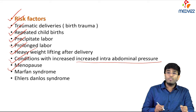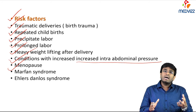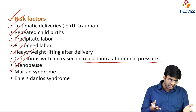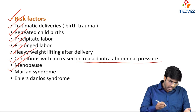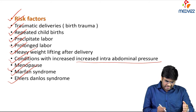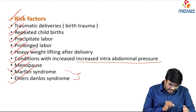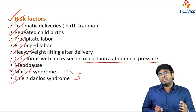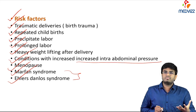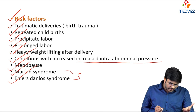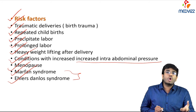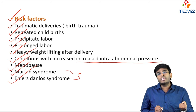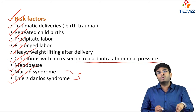Menopause causes weakening of the pelvic diaphragm and stretching of ligaments, which can lead to pelvic organ prolapse. Connective tissue disorders such as Marfan syndrome and Ehlers-Danlos syndrome impair connective tissue function so ligaments and the pelvic diaphragm are not strong enough to hold the uterus and vagina in place, leading to prolapse.